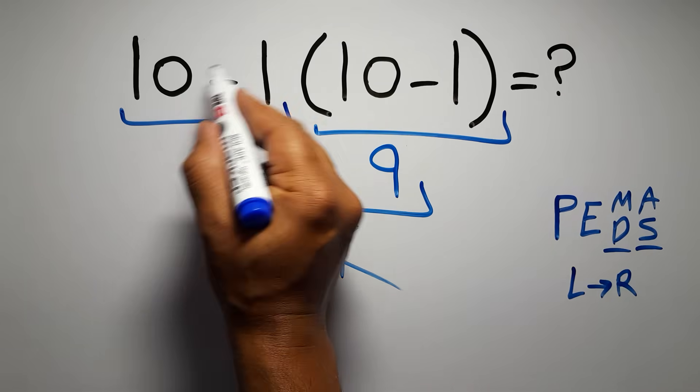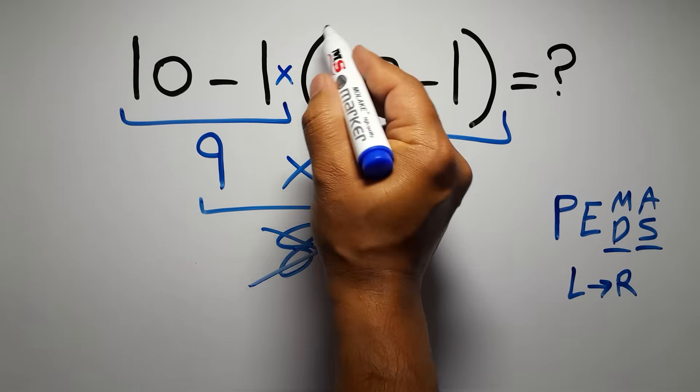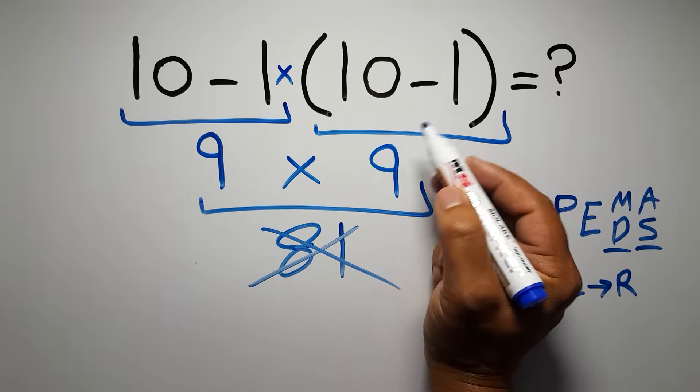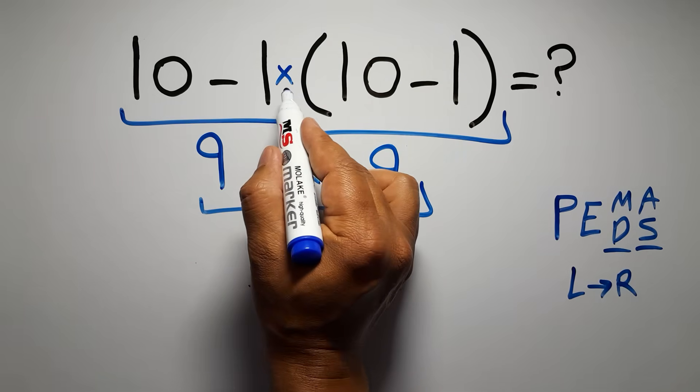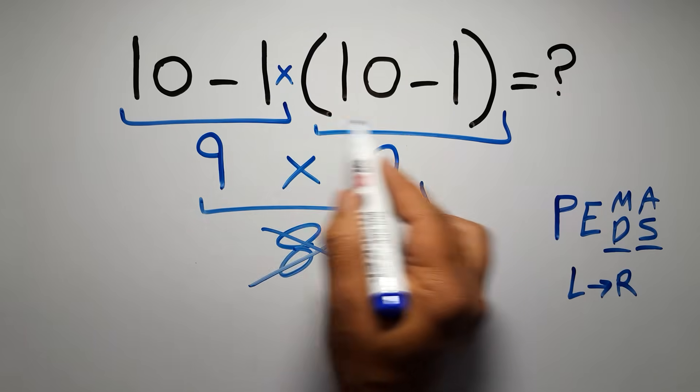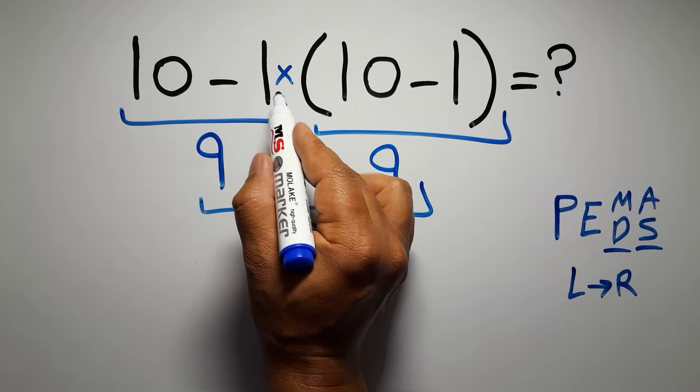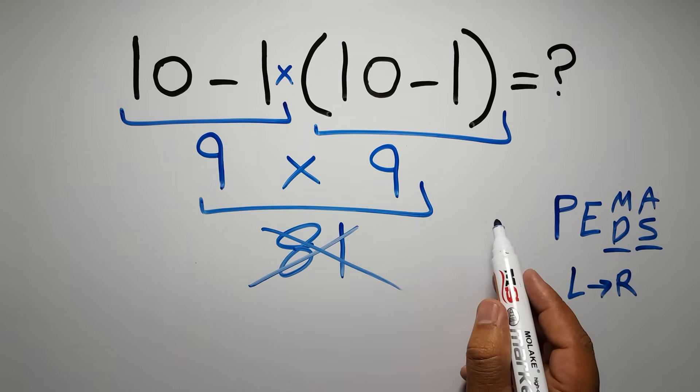In this expression, we have one subtraction, one multiplication, and one parentheses. Inside these parentheses, we have one subtraction. Here we have a multiplication, because in mathematics, when a number is placed next to parentheses, it means multiplication, and we usually don't write the multiplication sign for brevity.